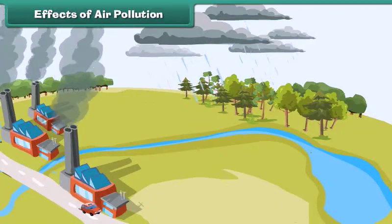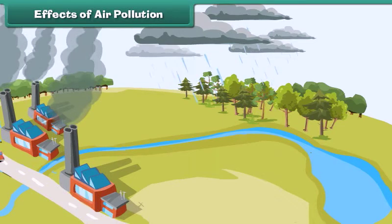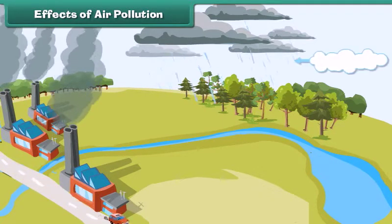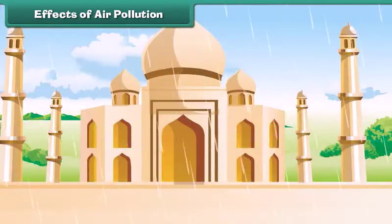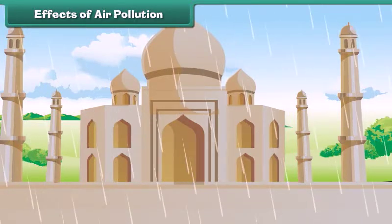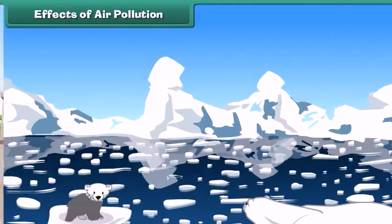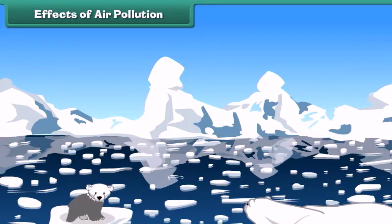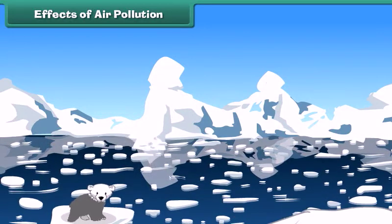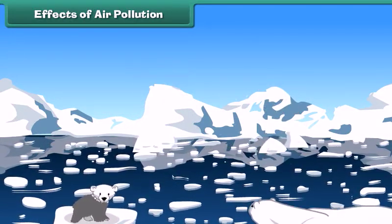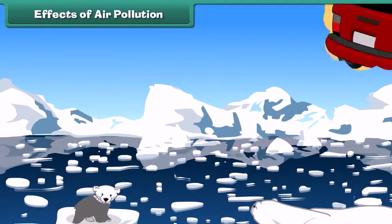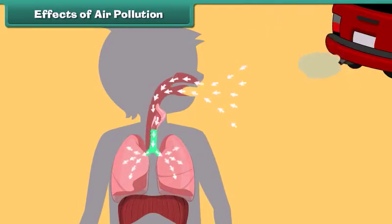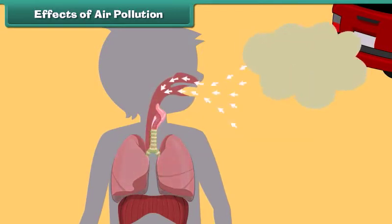This polluted air mixes with clouds in the atmosphere and brings harmful rain. This rain is also known as acid rain. Acid rain damages our buildings and monuments. Besides that, the large amount of carbon dioxide in air increases global temperatures, which subsequently results in the melting of glaciers. It adversely affects our lungs and we suffer from respiratory disorders.